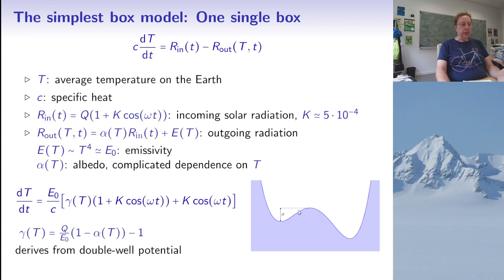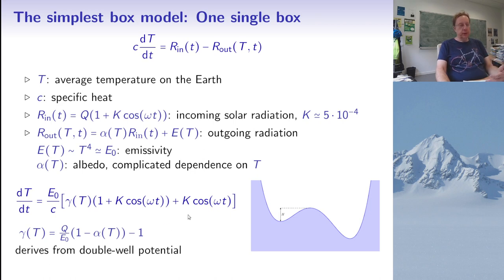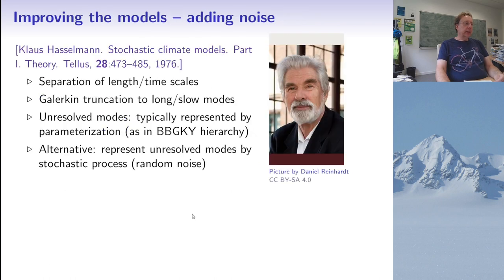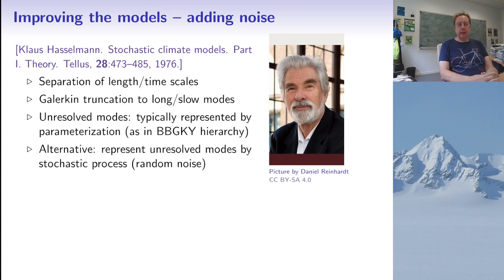With some simple assumptions you can find a right-hand side which is minus the derivative of a double well potential — two stable states and one unstable state in between — changing periodically in time. This is where adding noise to the system enters the scene, an idea proposed by climate scientist Klaus Hasselmann in the 1970s.